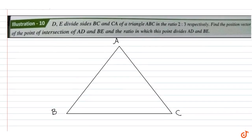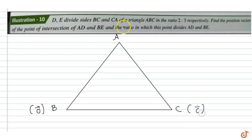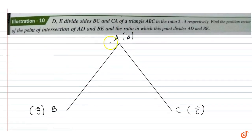We are given that D and E divide sides BC and CA of the triangle in the ratio 2:3. Let's assume B is the origin vector and A is the vector A. Now D divides BC in ratio 2:3, so BD:DC = 2:3.